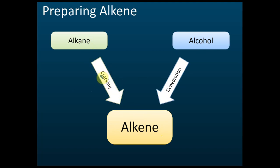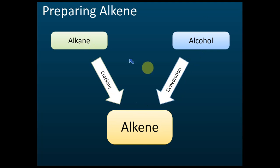Cracking of alkane means we break a big alkane molecule into smaller molecules, and it will become alkene. Dehydration of alcohol means removing water from alcohol — if we remove water from alcohol, it will also become alkene. So those are the two methods to prepare alkene.